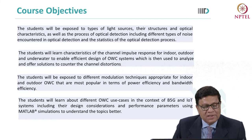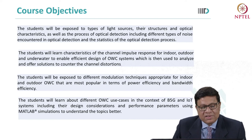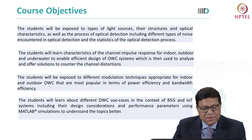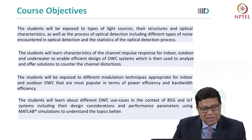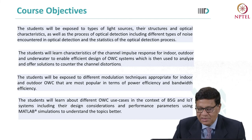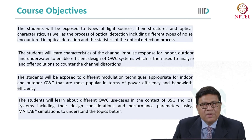The objectives of the course are as follows. Students will be exposed to different types of light sources, their structures and optical characteristics, as well as optical detection techniques and the statistics of the optical detection process. The second objective is that students will learn about the channel impulse response for indoor, outdoor and underwater environments so that they are able to design an optical wireless system. The third objective is that students will be exposed to different modulation schemes suitable for optical wireless communication systems, studied in terms of power efficiency and bandwidth efficiency.